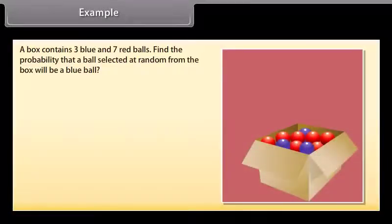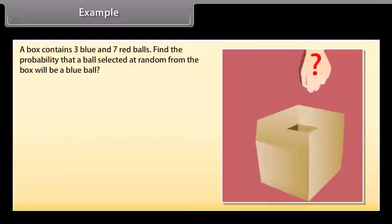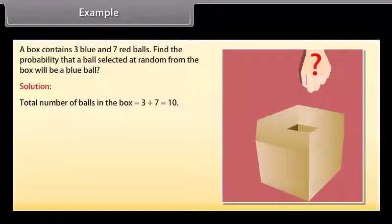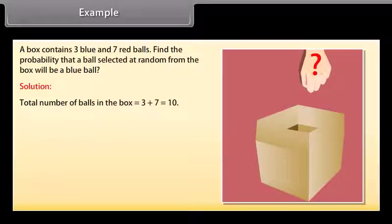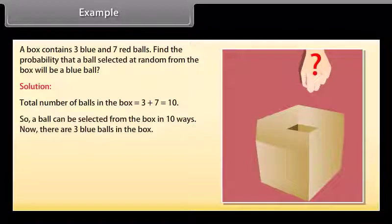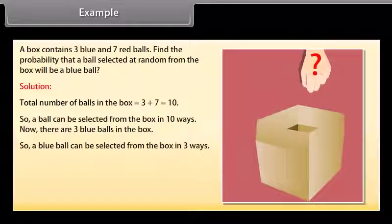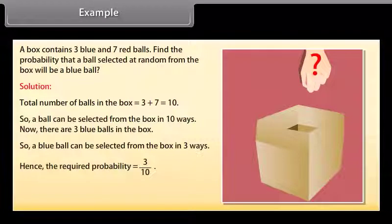A box contains three blue and seven red balls. Find the probability that a ball selected at random from the box will be a blue ball. Solution: Total number of balls = 3 + 7 = 10, so a ball can be selected in ten ways. There are three blue balls, so a blue ball can be selected in three ways. Hence the required probability is 3/10.